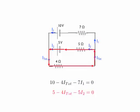The other loop I can look at goes through the 5-volt battery. I go through the 5-volt battery from minus to positive, so positive 5. Minus 4 times I-total is the voltage drop across the 4-ohm resistor. Minus 5 times I2 is the voltage drop across the 5-ohm resistor. I'm going around this loop in the direction that I guessed the current will flow, and that all adds up to zero.